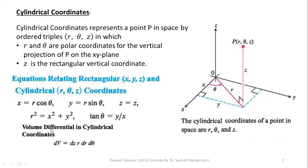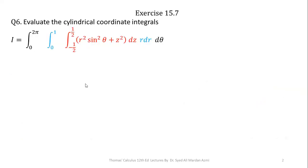Moreover, a small differential volume in cylindrical coordinates can be written as dV is equal to dZ, R, dR, dTheta, which means in the process of integration of triple integrals, we will always follow this order. Now, have a look at this question — Exercise 15.7, question number 6, from Thomas Calculus 12th edition.